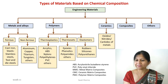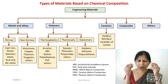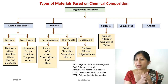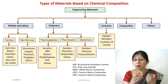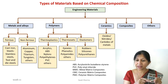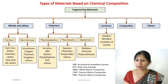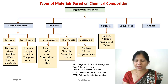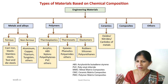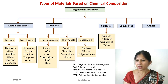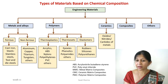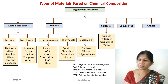Ceramics are typically oxides, nitrides, or carbides of metals — they are inorganic compounds, mostly metal-based. One specific example is alumina, Al2O3, which is a well-known ceramic material. These are some of the types and examples we will be referring to.